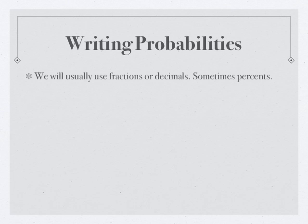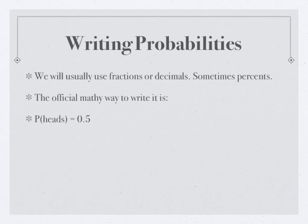When you write probabilities, we usually use fractions or decimals. Sometimes we use percents. You can use percents if you want, but I'm mostly going to use fractions and decimals. There's an official mathy way to write this. When you say it: probability of heads is 0.5. Notice how the open parenthesis means the word "of" — like in Fathom when we say "count of something": it's count, open parenthesis, and then the thing in the parenthesis. So this is the probability of heads is 0.5.